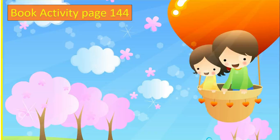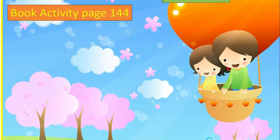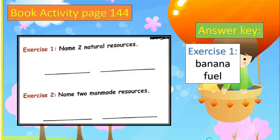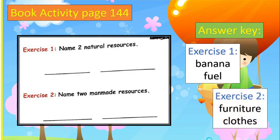Now open your book on page 144. In exercise 1, you are going to name 2 natural resources, like banana and fuel. How about in exercise 2, you are going to name 2 man-made resources, like furniture or clothes.